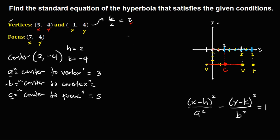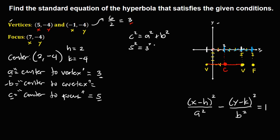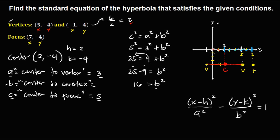Now that we have a and c, we solve for b using the formula c² = a² + b². Substituting: 5² = 3² + b², so 25 = 9 + b². Transposing: 25 − 9 = b², which gives 16 = b². Taking the square root, b equals positive 4.